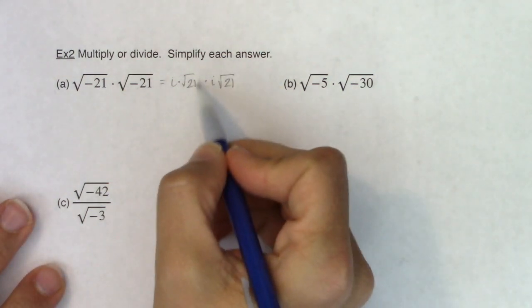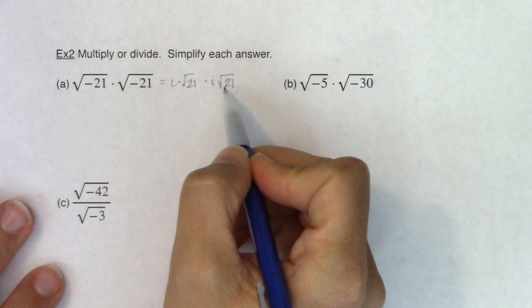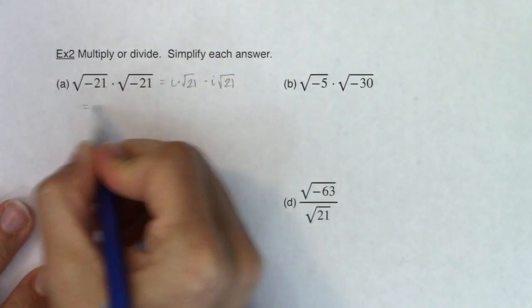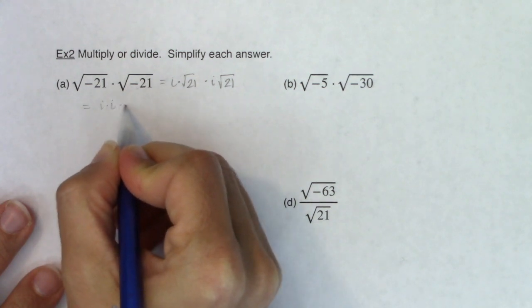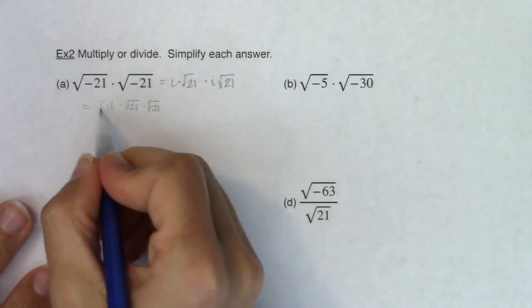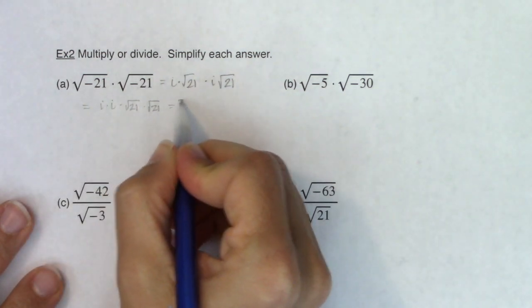And at this point I'm going to rearrange this using the fact that multiplication is commutative. And what I mean by that is I'm going to write this as i times i times the square root of 21 times the square root of 21. Alright now i times i is i squared.